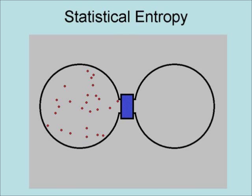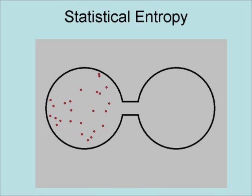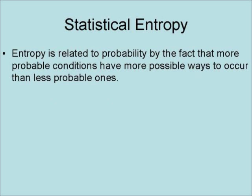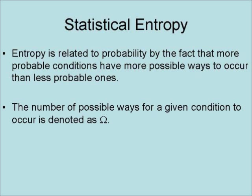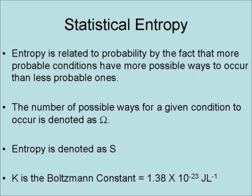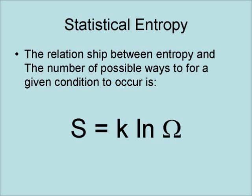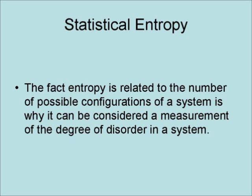A common example is a gas in a half-plugged container. When the plug is removed, it is highly improbable that all of the gas would remain on one side. The overwhelmingly more probable situation is that the gas gets evenly distributed between both parts of the container, and this is what is actually observed to occur. Entropy is related to probabilities by the fact that more probable conditions have more possible ways to occur. The number of possible ways for a given condition to occur is denoted as omega (Ω). Entropy is denoted as S, K is Boltzmann's constant, and the relationship is S equals K times the natural logarithm of omega. This is why entropy can be considered a measure of the degree of disorder in a system.